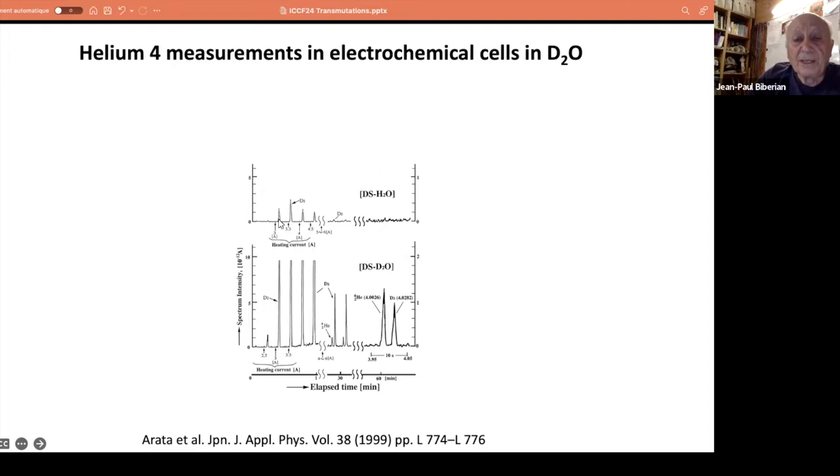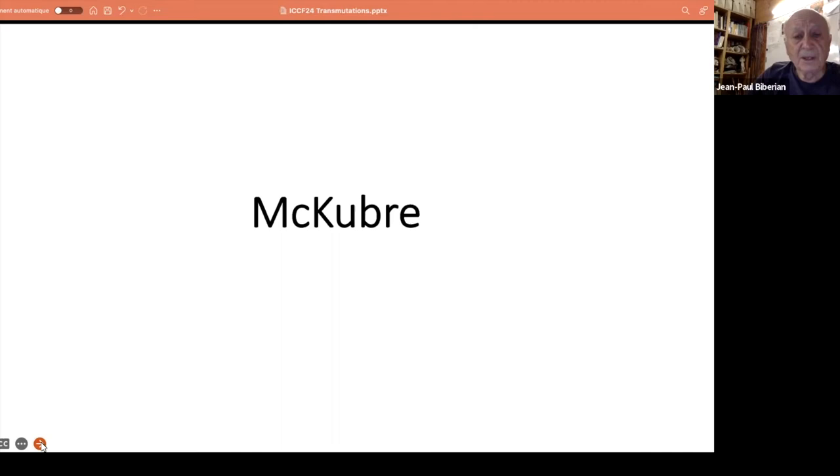Here you can see the graphs. On top, he has done experiments with light water, ordinary water, and you see there is no helium produced here. But when he puts heavy water instead, he sees a helium peak, which is not present when there is no deuterium. So definitely, this is very good proof that he is producing helium-4. We have three experiments here that are really without any criticism about it.